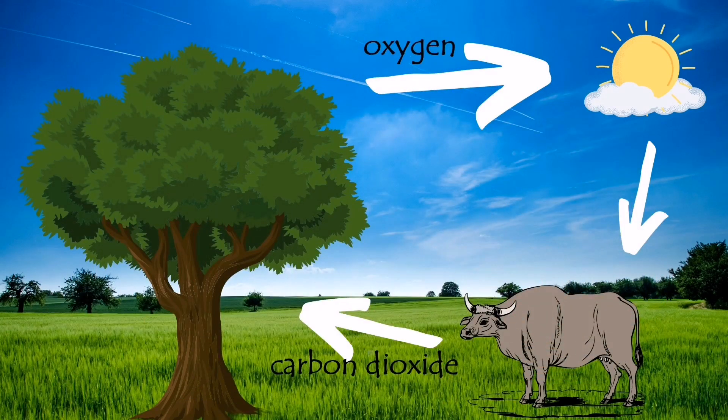Number 3: What do you think will happen if the cow or the carabao or other animals will not give off carbon dioxide? And what do you think will happen if the trees or other plants are not present in the environment? Number 4: Do they have important roles in the environment? Number 5: What are the organisms interacting with each other? Is the interaction beneficial or harmful? Just comment your answer in the comment section after this video.